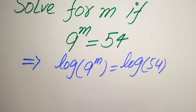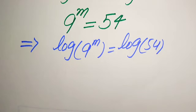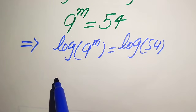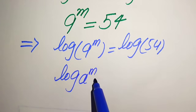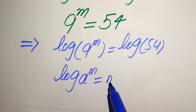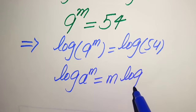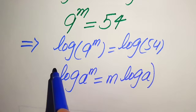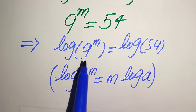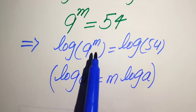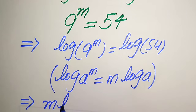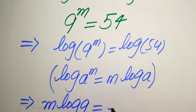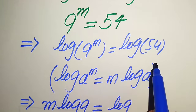In the next step we use a nice property of log: log of a to the power of m equals m times log a. According to this property, we move the exponent m to the front, so it is written as m times log 9 equals log of 54.